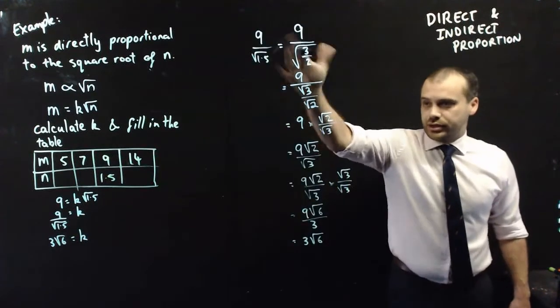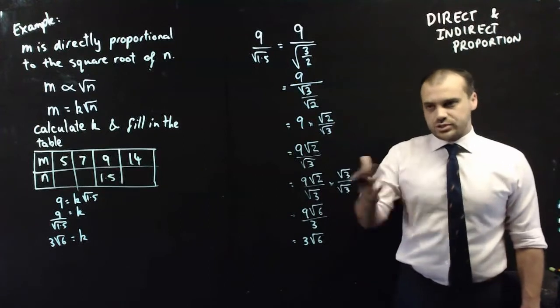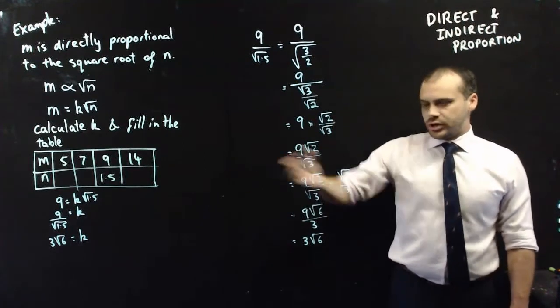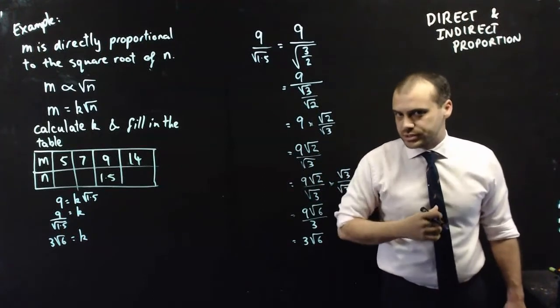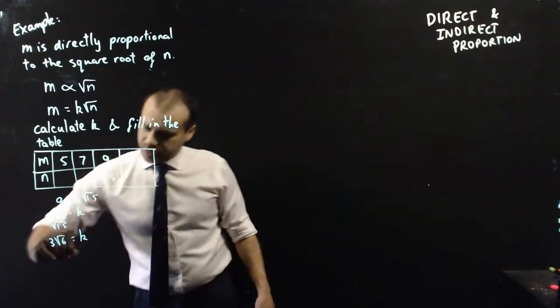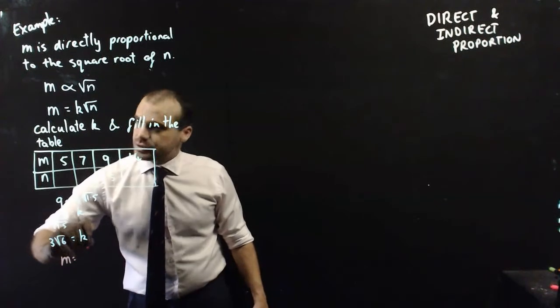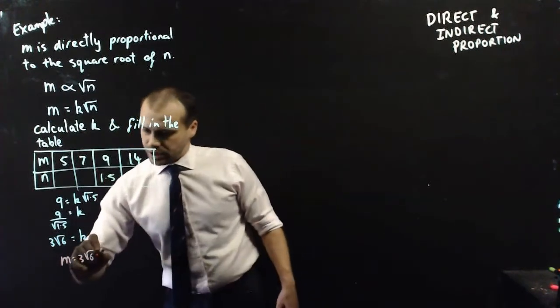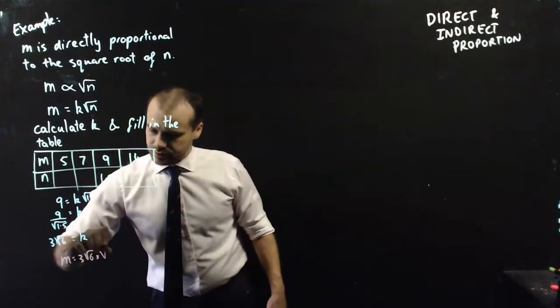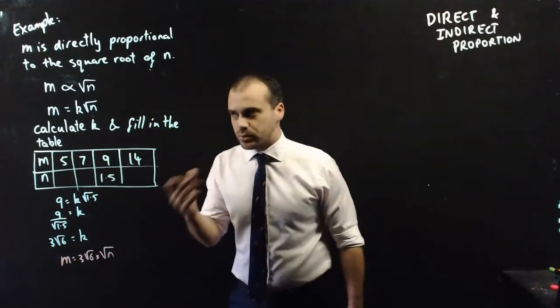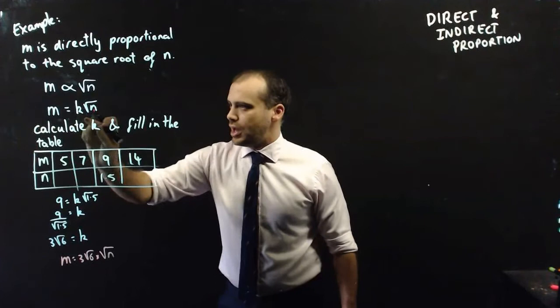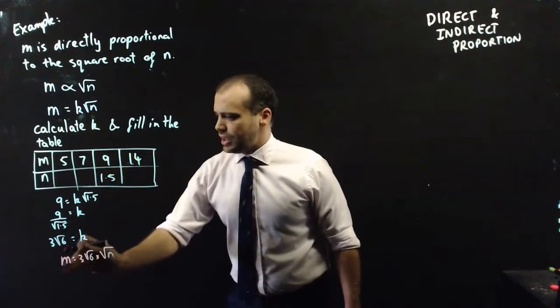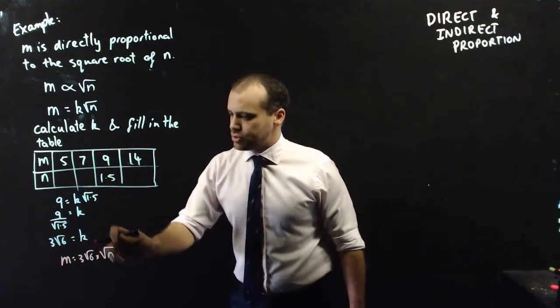Something like that. It relies on you knowing a little bit about surds and then rationalizing a denominator. But in any case, I know now that k is equal to 3 root 6. So, now that I know that, I have a formula. I know that m equals 3 root 6 times root n. Okay, so remember what we were doing. We had this formula and we were trying to find out what k is. Now that we know what k is, we can put it in there. m equals 3 root 6 times root n.